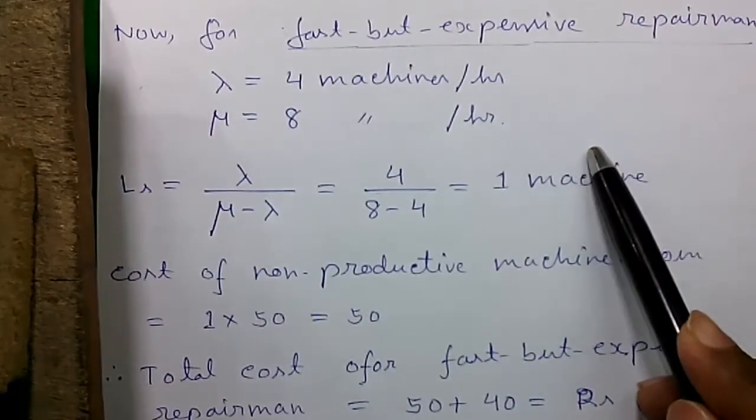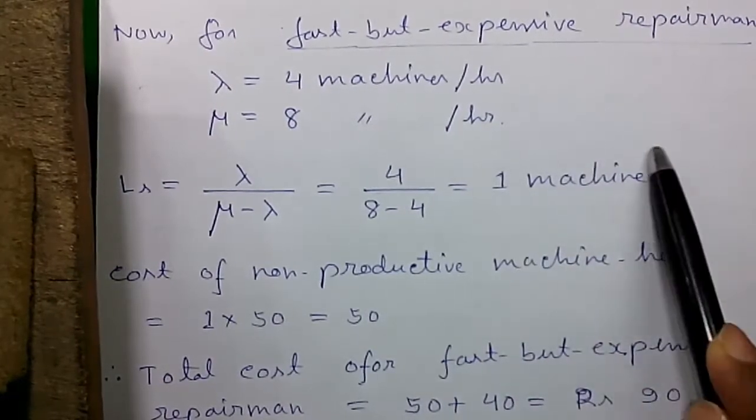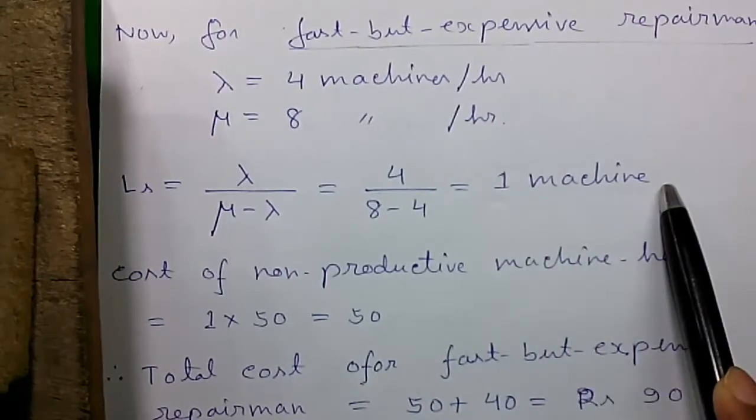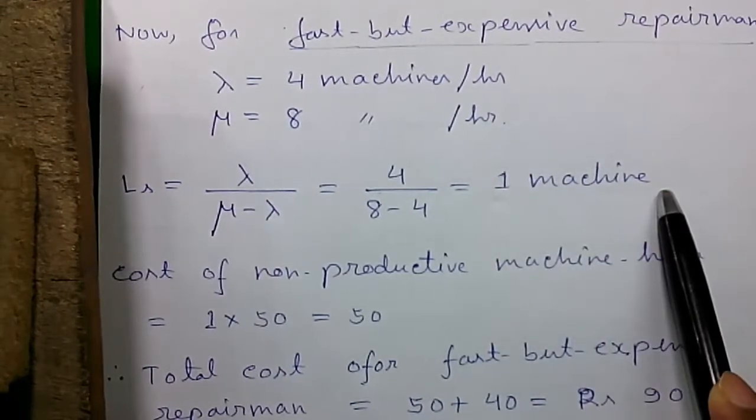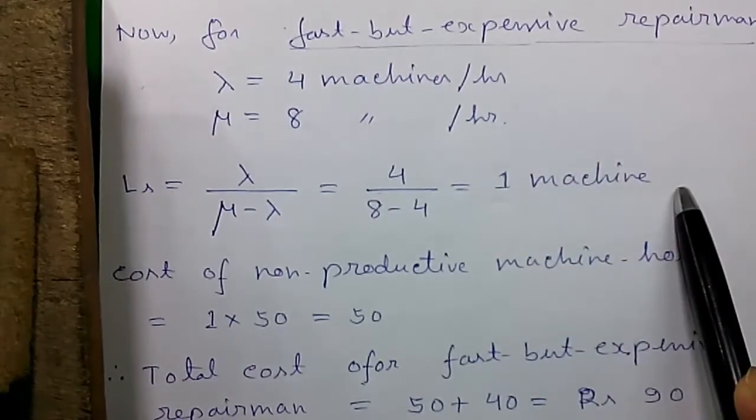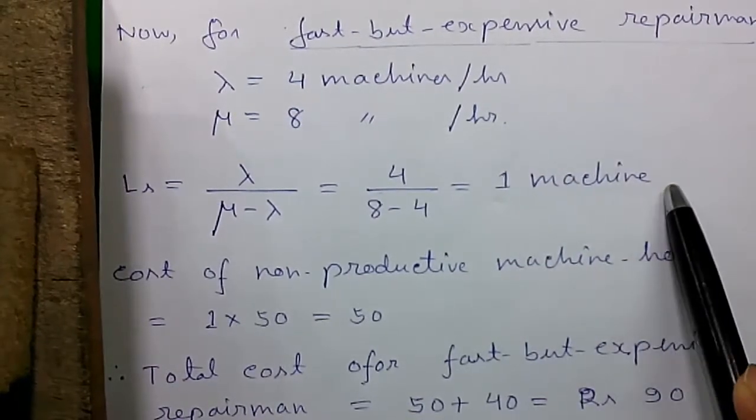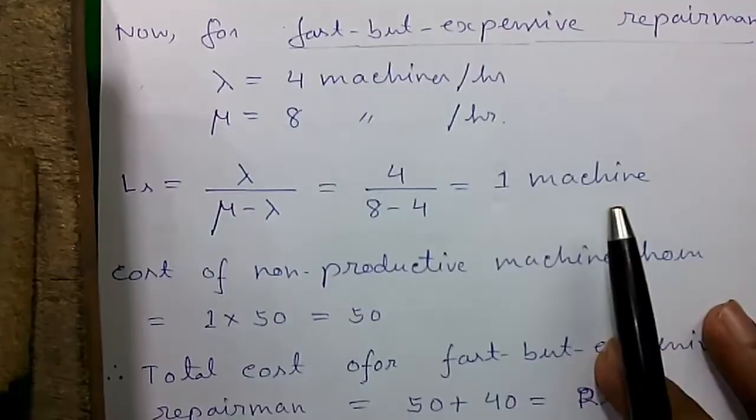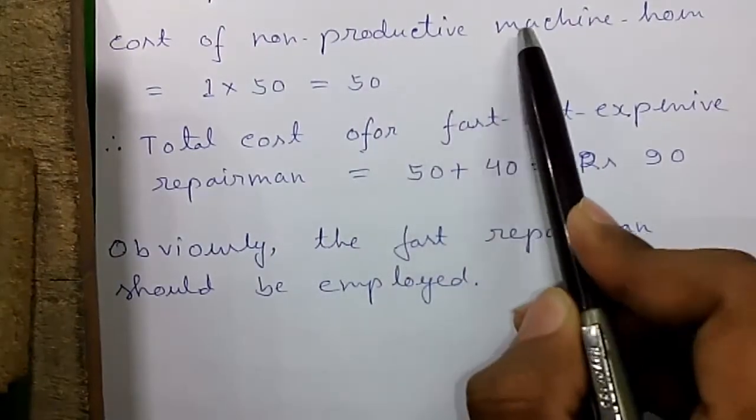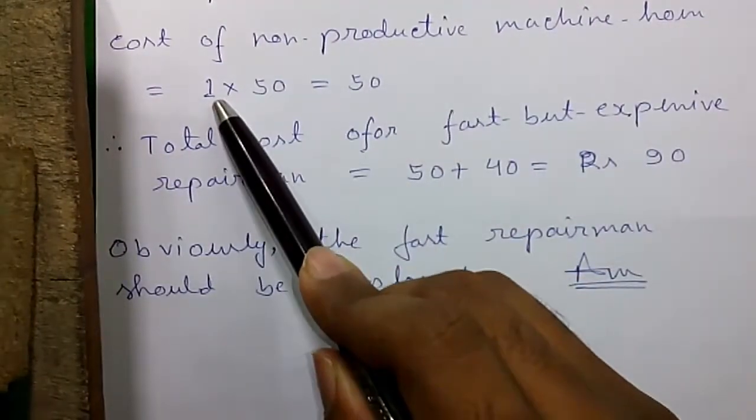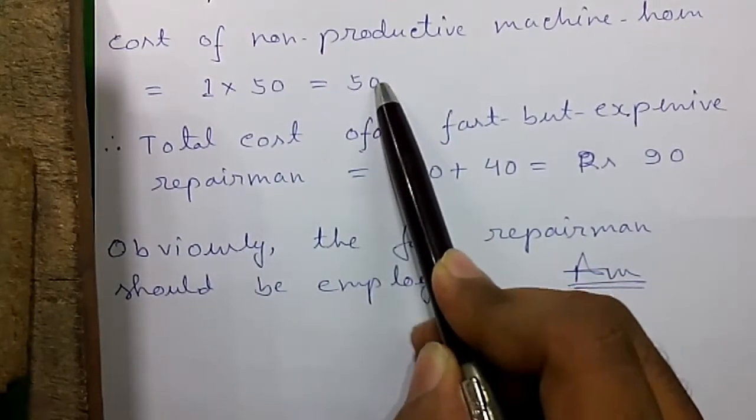That means the slow repairmen keeps 2 machines always in idle because he is slow. But the fast repairmen keeps only 1 machine in idle because he is fast. So we can say he is twice fast than the slow repairmen. Now the cost of non-productive machine hour is given by 1 times 50 that's equals to rupees 50.